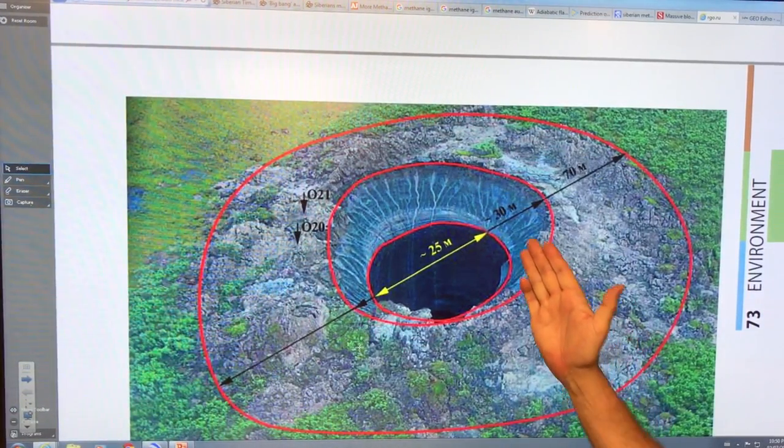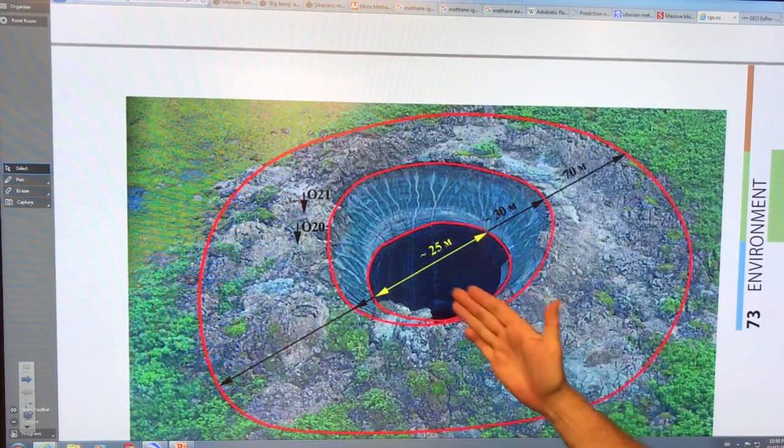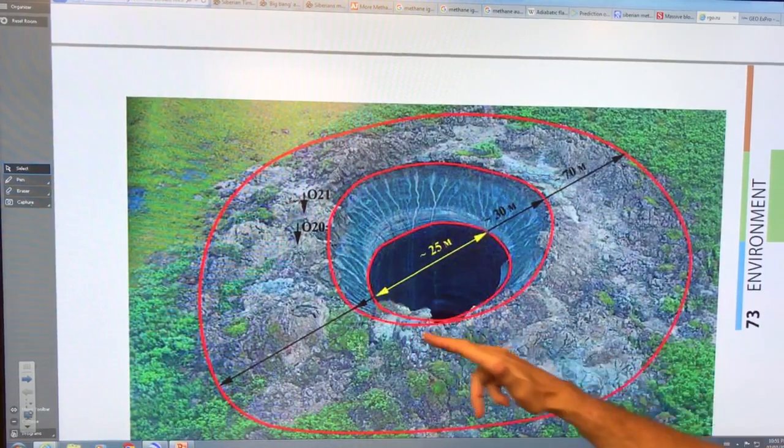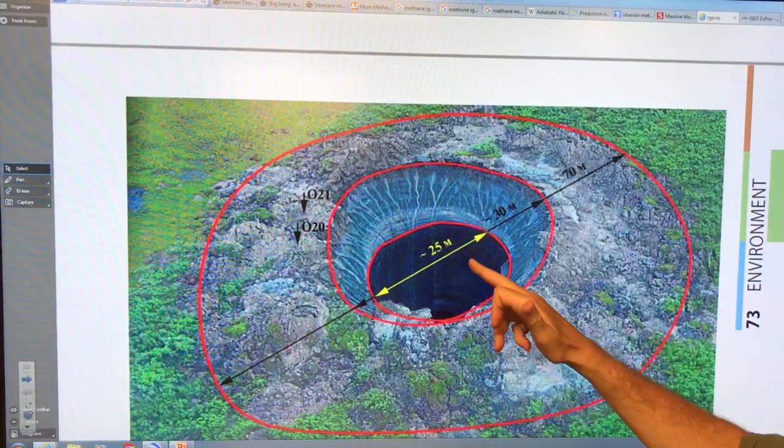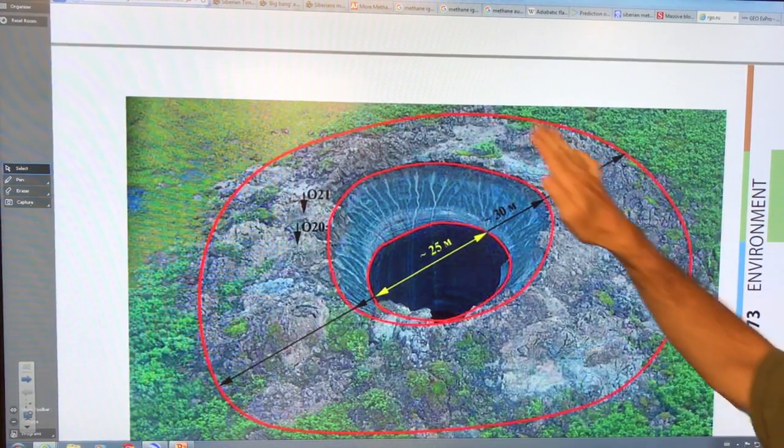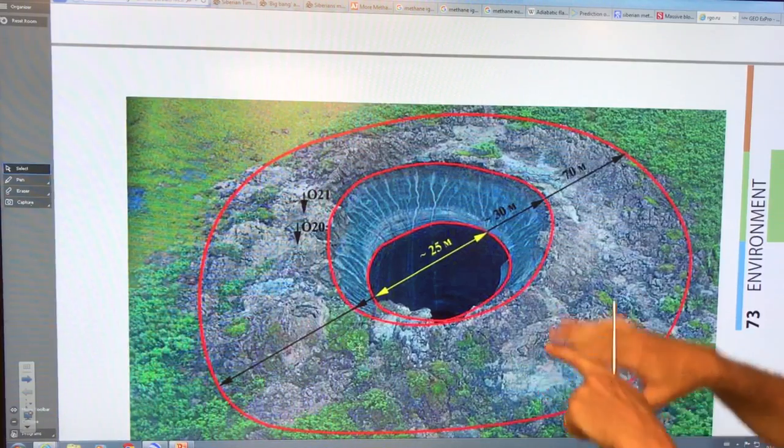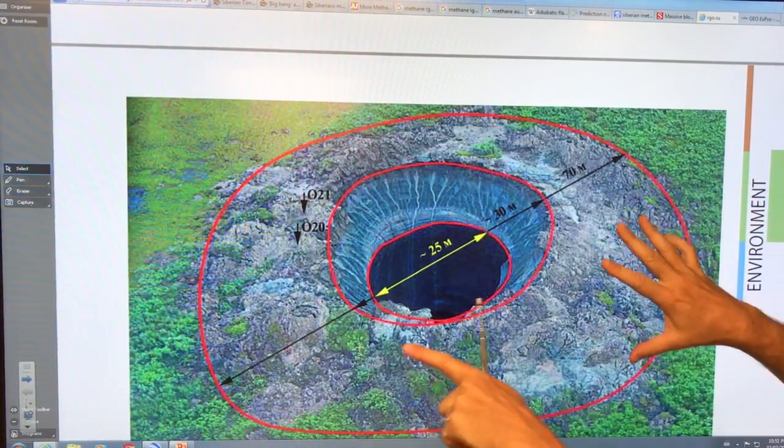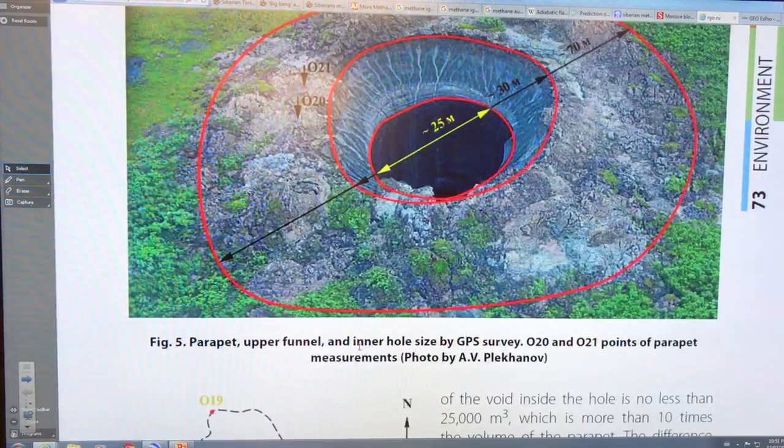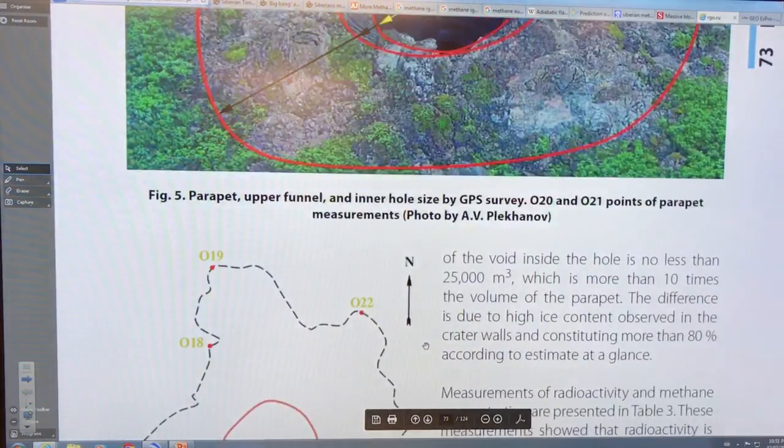This is an interesting image. So this crater is 25 meters. This funnel is 25 meters. There's looks like there's a funnel feature here extending out 30 meters. And then 70 meters they call it the parapet. You can see this is either material that was just pushed out and blown out or stuff deposited here. And then of course, stuff is blown over very long distances. So parapet, upper funnel and inner hole size.